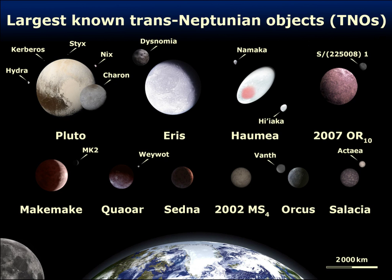While the term 'precovery' refers to a pre-discovery image, 'recovery' refers to imaging of a body which was lost to our view as behind the Sun, but is now visible again. Also see lost minor planets and lost comets.